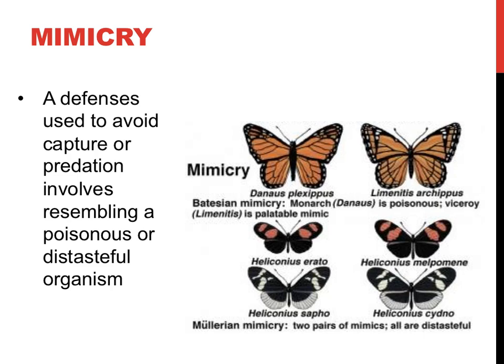Some toxic or distasteful organisms have colors or color patterns that are easily identifiable to potential predators. Some different toxic and non-toxic organisms have evolved similar color patterns and avoided predation by doing so. An example involves the monarch butterfly and viceroy butterfly. The monarch is distasteful or poisonous, while the similarly patterned viceroy is not. Birds avoid eating both types of butterflies because it's difficult to tell the two apart. This type of mimicry, where one organism is toxic and the other is not, is called Batesian mimicry.